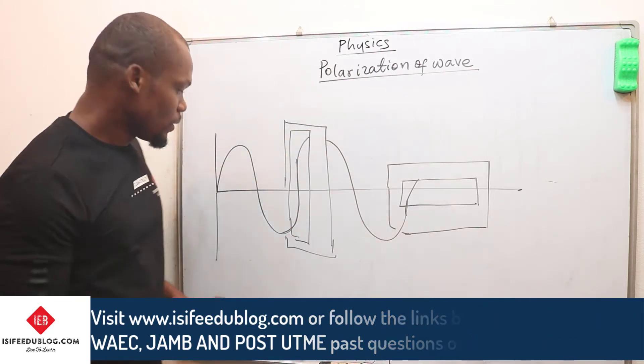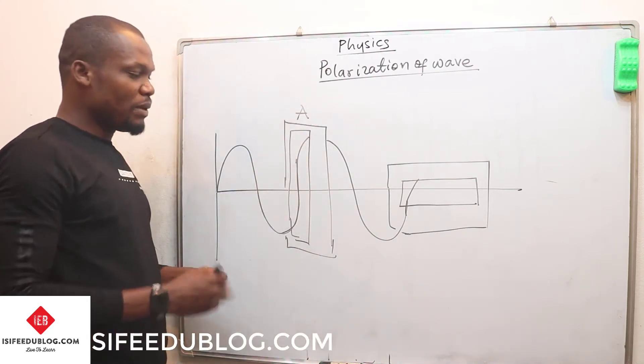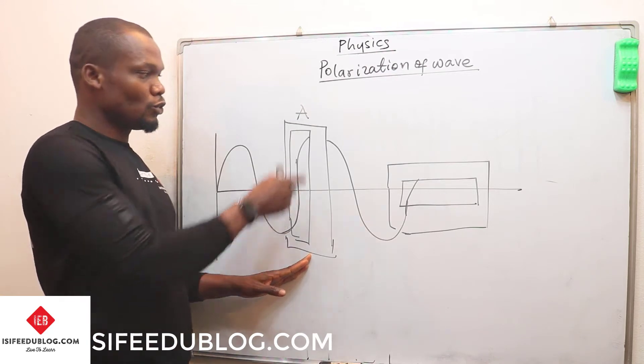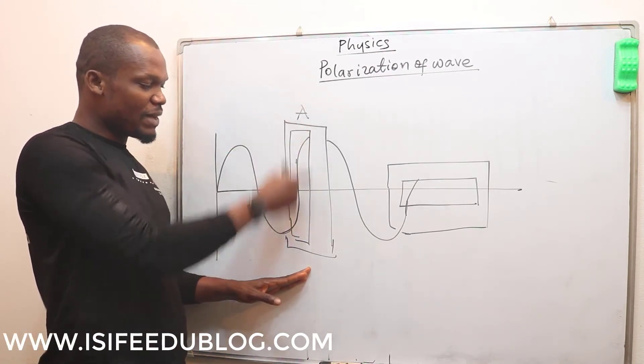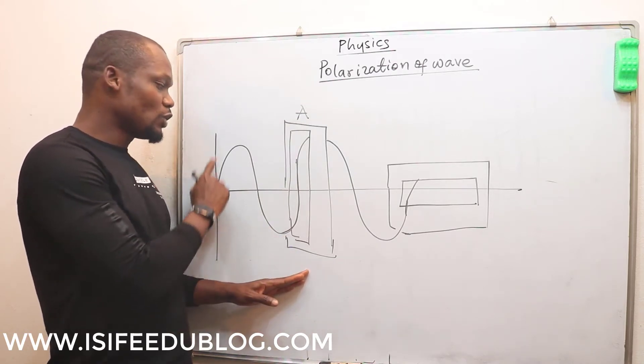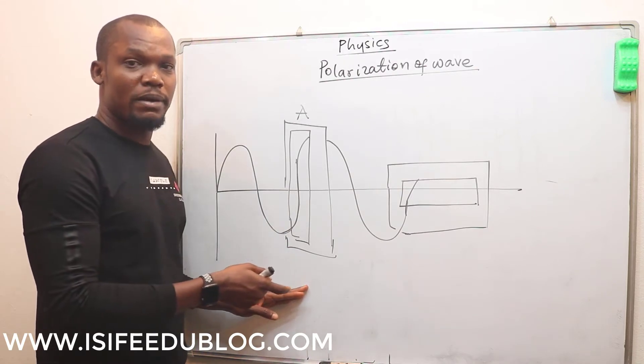So at this point, I call it point A, we place a cardboard paper to support the vertical plane. This cardboard paper, the opening is kept vertically. Hence, because this wave is moving in the vertical plane, it can pass through this cardboard paper, which means it allows the waves to continue to move.